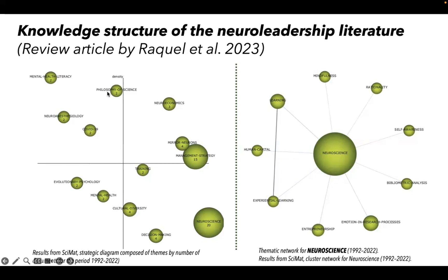Philosophy of science, anesthesiology, and COVID-19 have low centralities but are highly developed and specialized, even though they might not have strong external links to the rest of the field. This is a thematic network of the node of neuroscience — if you were to click on this node, you could see the thematic network. It has links between learning, mindfulness, and rationality, and you can also see links between the nodes it's connected to.